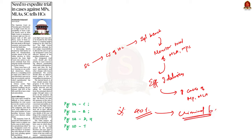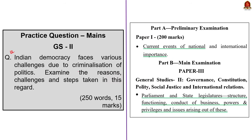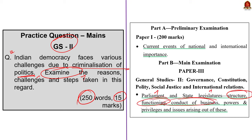In this context, let us go through what is criminalization of politics and its impacts on Indian democracy using a main answer writing approach. The question is: 'Indian democracy faces various challenges due to criminalization of politics. Examine the reasons, challenges and steps taken in this regard.' This is a 15-mark question to be written within 250 words. It can be asked in GS Paper 2 under the syllabus of Parliament and state legislatures — structure, functioning, conduct of business, powers and privileges. The keyword here is 'examine,' which means we are expected to present clarity about various perspectives of the issue, and in the conclusion, take a balanced stand.